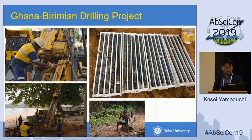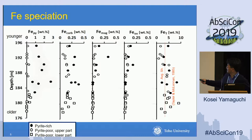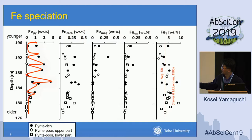I would like to show you the results of the iron speciation analysis. Here are the depth profiles of iron species from left to right: iron pyrite, pyrite-bound iron, iron carbonate, magnetite-bound iron, iron oxide, and total iron (FeT). The red dashed line represents the average iron content of average shale from Taylor and McLennan 1985. We divided the samples into three units: pyrite-poor lower samples, pyrite-poor upper samples (open symbols), and pyrite-rich samples (filled circles).